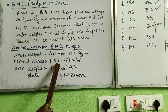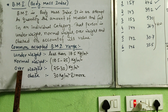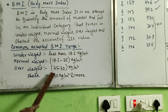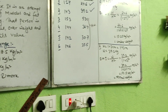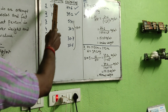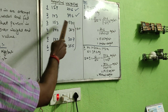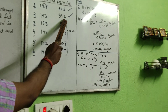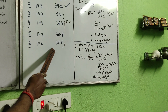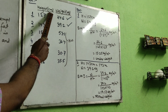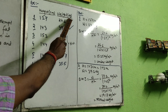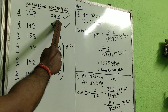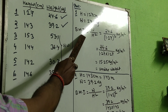Now let's see how to calculate BMI for specific individuals. I have given a chart with six persons. I will do the first two examples myself to show you how to calculate, and the remaining four you have to do at home as homework. The chart shows height in centimeters and weight in kilograms. The first person has a height of 127 cm and weight of 24.6 kg.